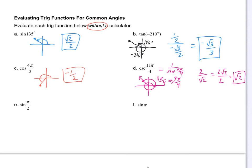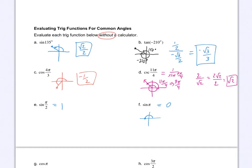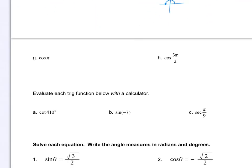Sine of π/2 — that might be the easiest one on the page. π/2 is 90 degrees, so the sine is 1 — just the y-coordinate at 90 degrees. Sine of π: π puts us at 180 degrees, and the y-coordinate is 0. Cosine of π: the x-coordinate at π is negative 1. Cosine of 3π/2: 3π/2 is the same position as 270 degrees, so the x-coordinate is 0.